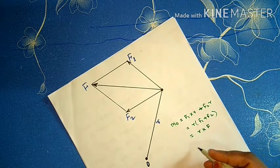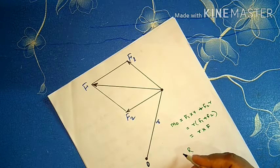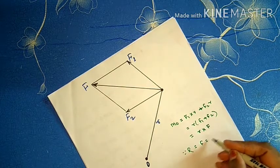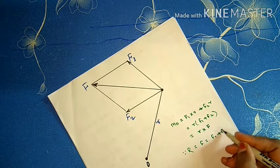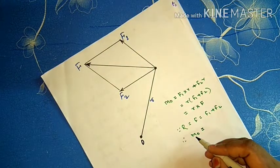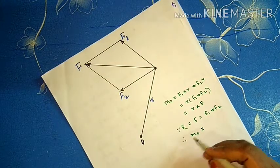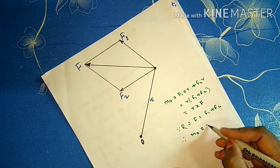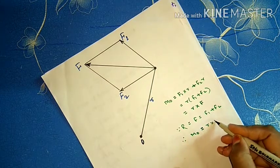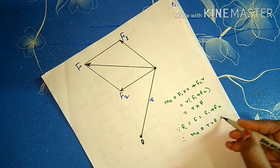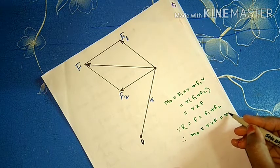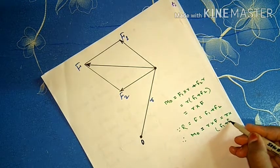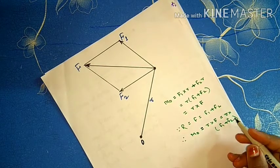So we can say that the moment of forces F1 and F2 about point O equals R·F, which equals R into (F1 plus F2). That is, the moment of forces F1 and F2 about point O equals R·F, equal to R into (F1 plus F2).